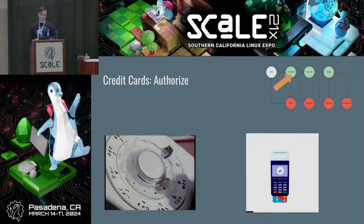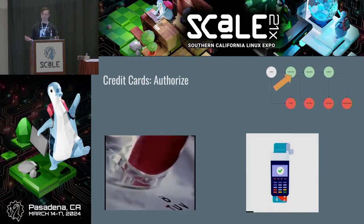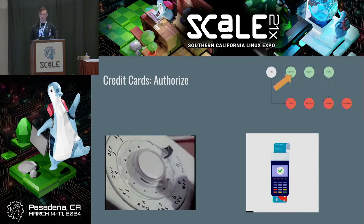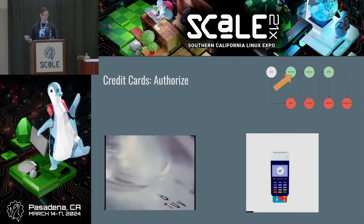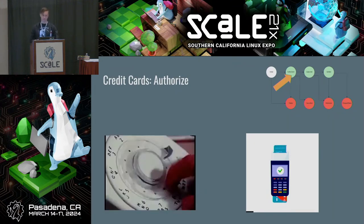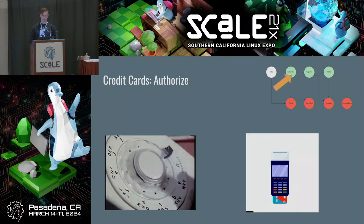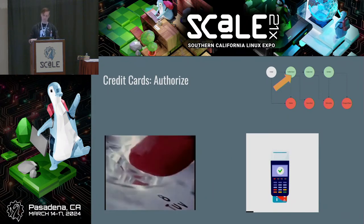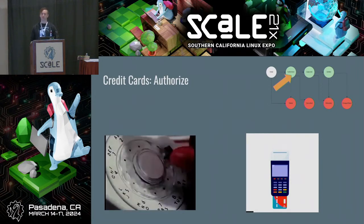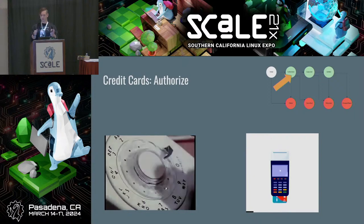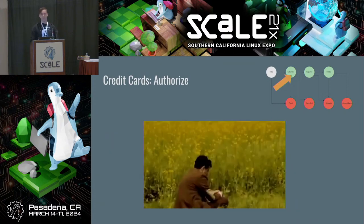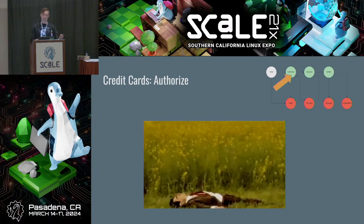The first step in this flow is authorization. This is an older idea — it would have started out as a phone call in the 50s or 60s. So you'd walk into an old-timey shop and they'd call and say, 'Does Vincent have the $5 to cover this with account number 123?' and get a yes or no. Today it's the same thing, but computer to computer, including things like a PIN check and authorizing a certain amount. Assuming this passes, the money hasn't transferred yet.